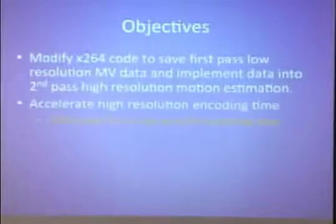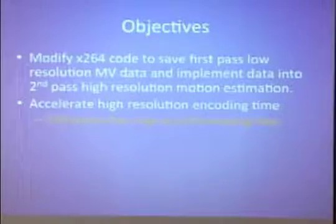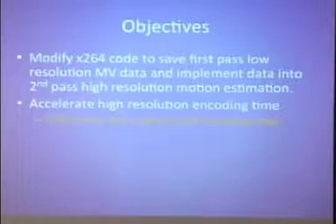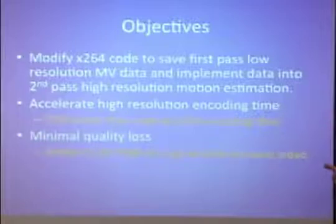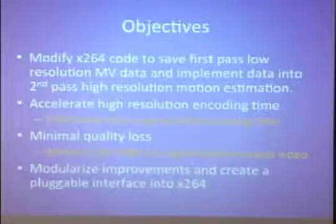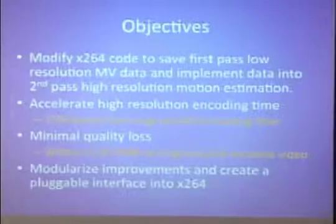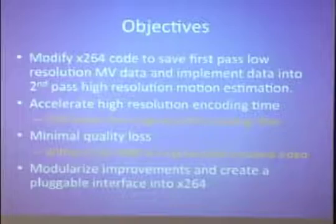Our objective was to modify the code to have the low-resolution pass save out motion vector data, then read that in from a file and apply it to the high-resolution pass. We hoped this would speed things up about 15% over the original code with minimal quality loss, defined in PSNR (peak signal-to-noise ratio) — we wanted to keep that under 0.1%. Finally, we wanted to modularize this so it could be applied to a general X264 encoder and not just one specific product.